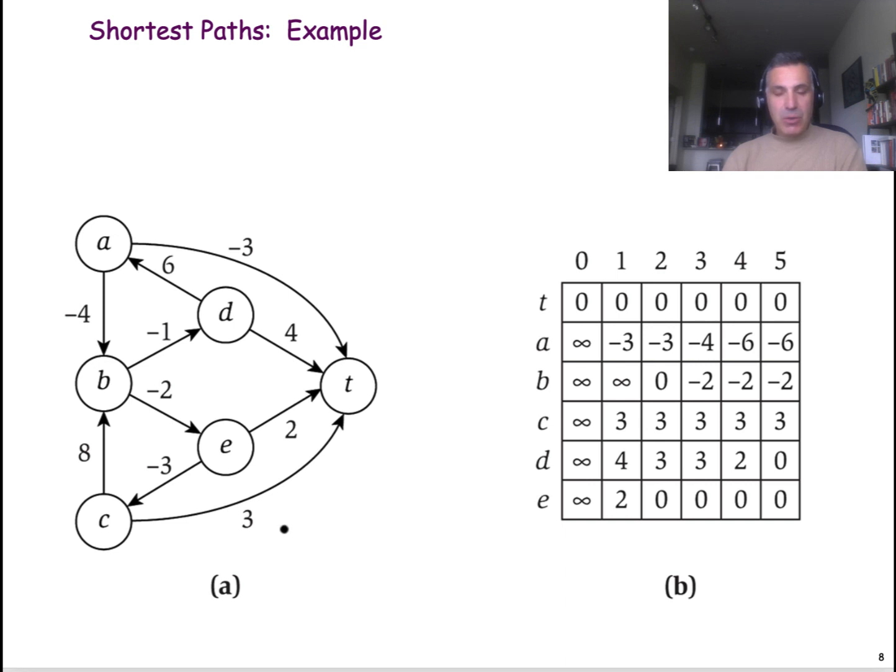So, here is an example that you can also find in your textbook. Here is the target. Here is the matrix M with all the values of I. We have six nodes, so I can go up to 5, and we have the nodes here in the rows of the table. The initialization is the first row and the first column. And then we are computing the columns of the matrix one by one. Notice how the distance from a certain node to the target can gradually decrease as we consider paths that are potentially longer and longer.